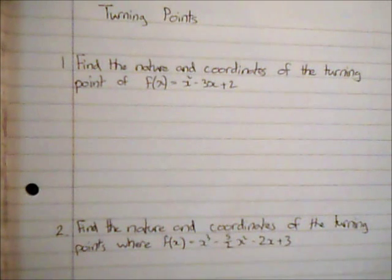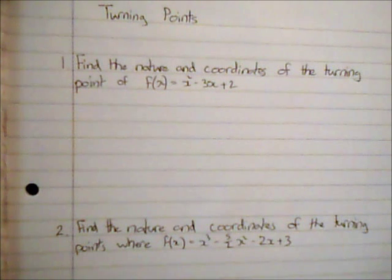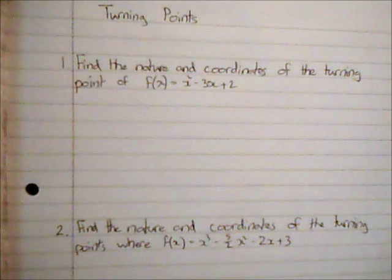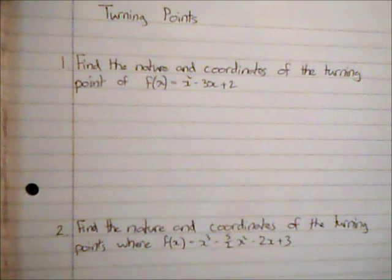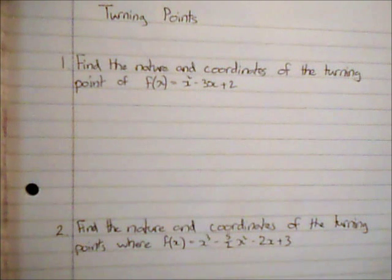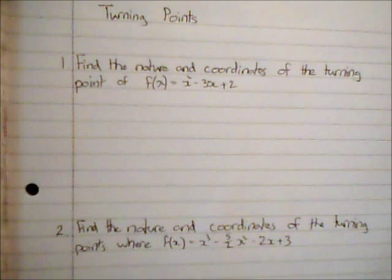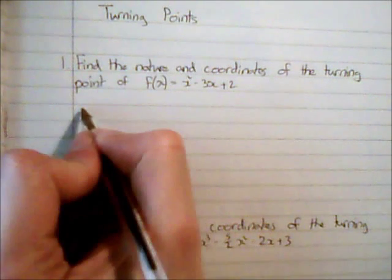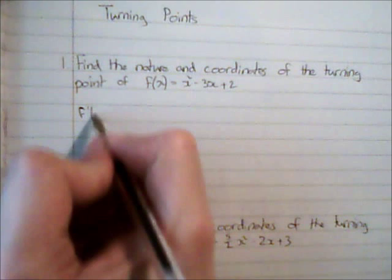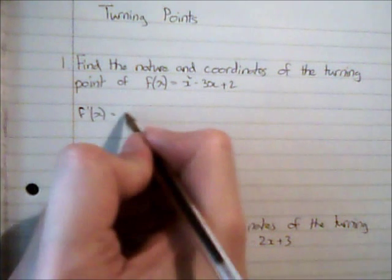In this video we're going to consider turning points. A turning point is where the gradient of a curve is equal to zero. So if the gradient is equal to zero, then when we differentiate that function the value of that is going to be zero. So I'm going to evaluate the gradient function of f(x) by differentiation.